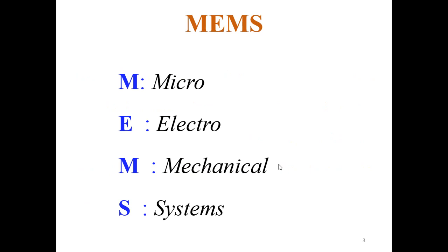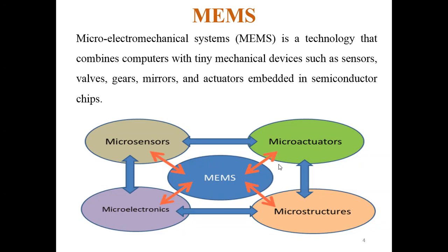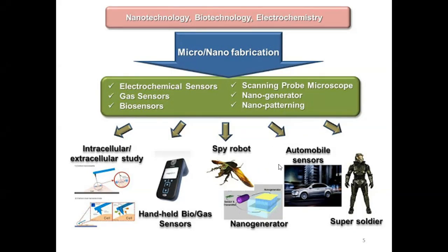MEMS stands for Micro Electro Mechanical Systems. It is a combination of electronics and mechanical systems in a very small size — that is why 'micro' is in the name. MEMS is a technology that combines computers with tiny mechanical devices such as sensors, valves, gears, mirrors, and actuators, all embedded in a single semiconductor chip. As we can see in the figure, MEMS is a combination of micro sensors, micro actuators, micro structures, and micro electronics.